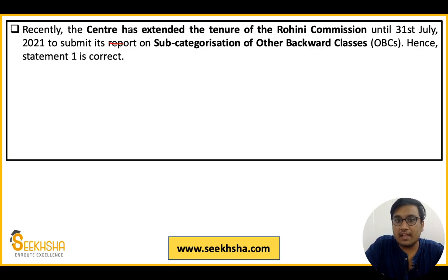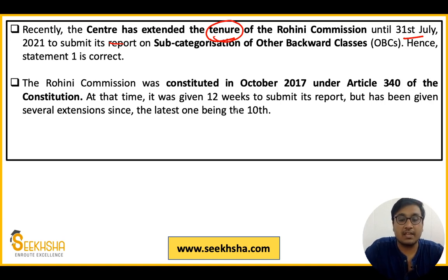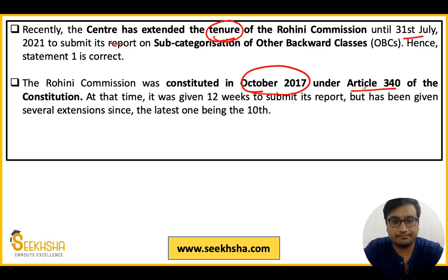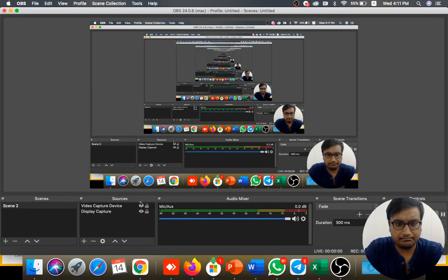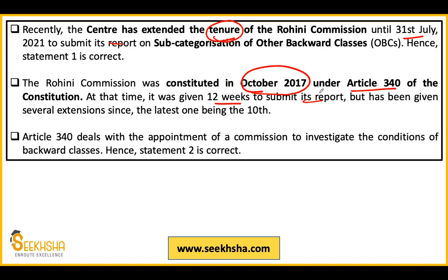Why did the commission come in the news? Because its tenure was extended. The tenure was extended to 31 July 2021 to submit the report. It was originally made in October 2017 under Article 340, and at that time it was given 12 weeks to submit its report. But due to certain reasons this report could not be submitted, and then COVID came, so extensions were continuously given. Article 340 directly states that a commission is appointed to investigate various conditions of backward classes. This is a polity question derived from current affairs. Now the second question is a scheme-based question.